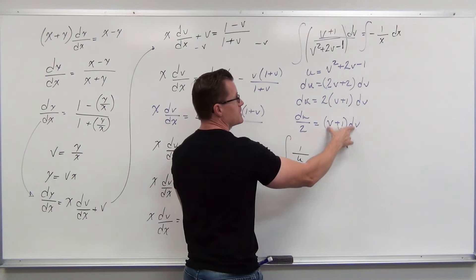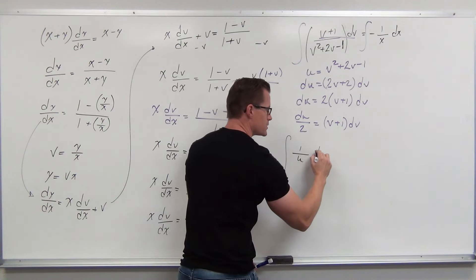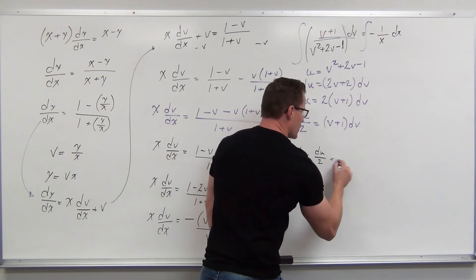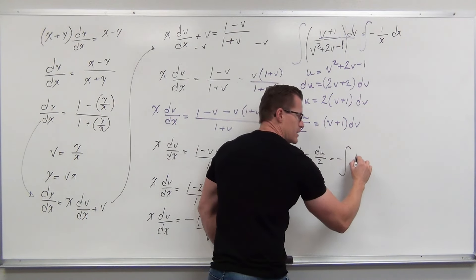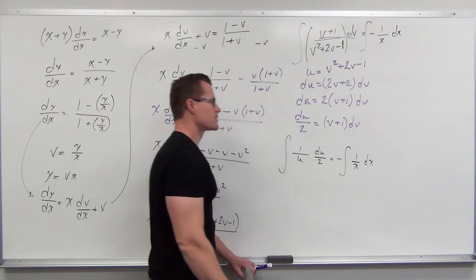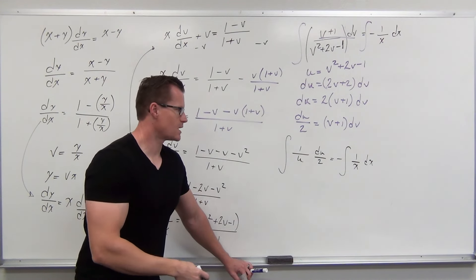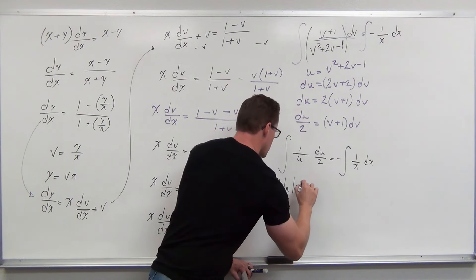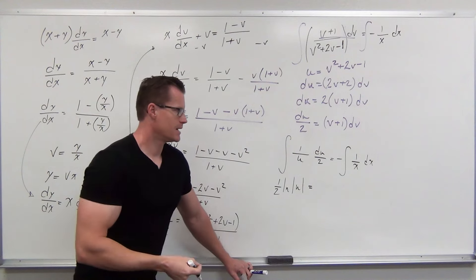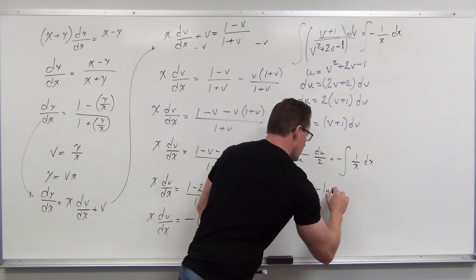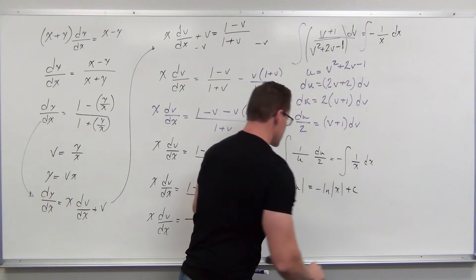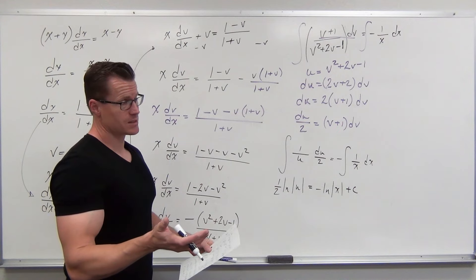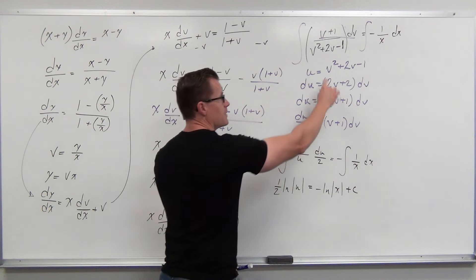The v + 1 in the numerator goes away because (v+1)dv = du/2. The denominator u is the whole expression v² + 2v − 1. So on the left we get ½ ln|u|, on the right −ln|x| + C. We must substitute back for u, so the left side becomes ½ ln|v² + 2v − 1|. Then we'll multiply everything by 2 to clear the ½ and avoid dealing with square roots.